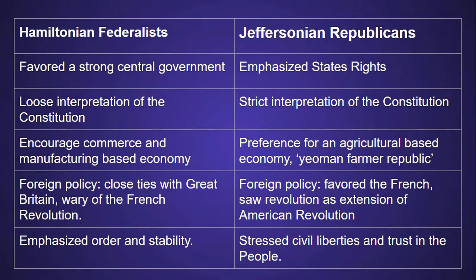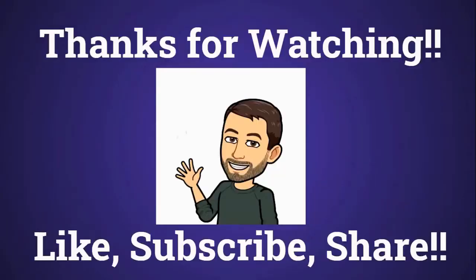The Republicans were outraged when the U.S. got into an undeclared quasi-war with France during the Adams administration. Lastly, the Hamiltonians emphasized the government playing a strong role in creating order and stability, while the Jeffersonians were always wary of a strong government and stressed protection of civil liberties and trust in the people.